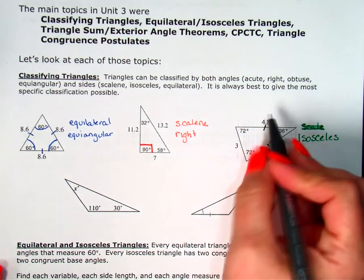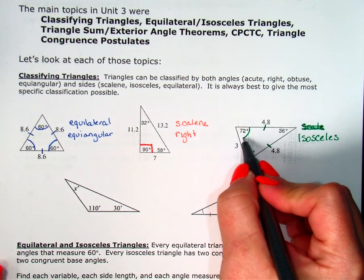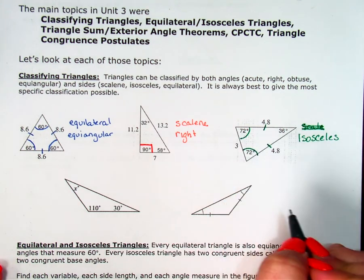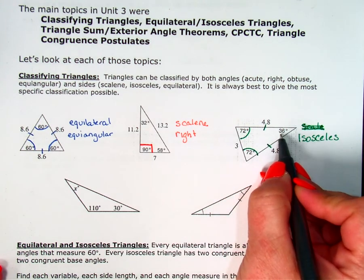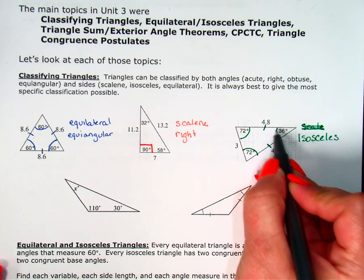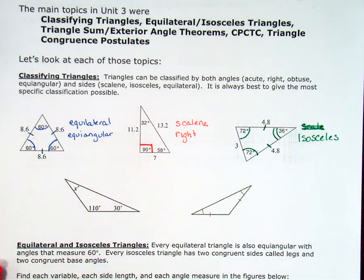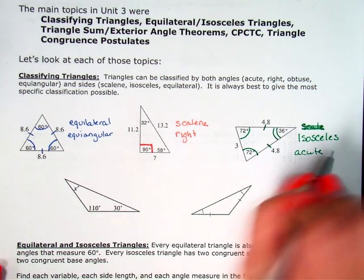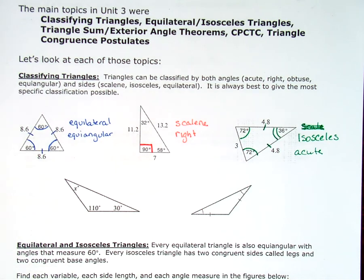Then when I look at the angles, I see I have two angles that are both 72, which makes sense if it's isosceles because my base angles should be the same. And then I have another angle that's 36 degrees. I'm going to put a different mark on that one because it's a different angle. They're all acute angles, so that means this triangle is an acute triangle. So it's isosceles and it's acute.